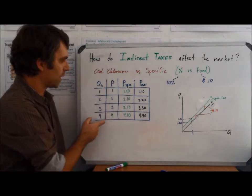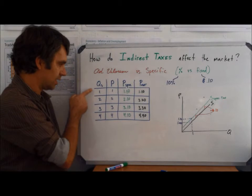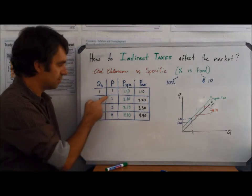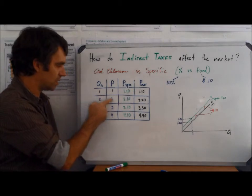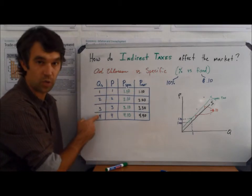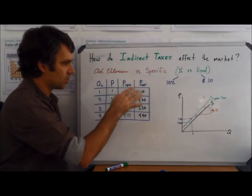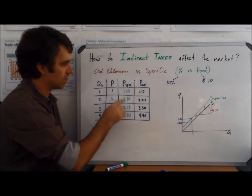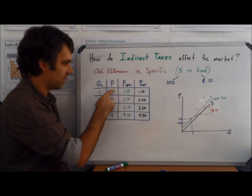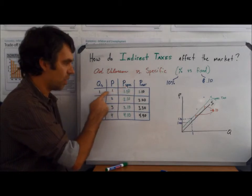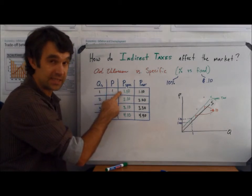If we look at the supply schedule, what we can see is for the same quantity supplied, here's our original price that is needed to incentivize or motivate me to produce the corresponding quantity. Well, the effect that these two are going to have would look like this. Because with a specific tax, if it would take a price of $1 to get me to make one unit, now it's going to take a price of $1.10.